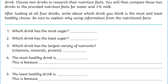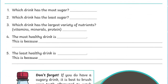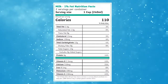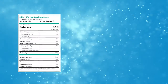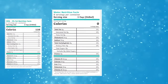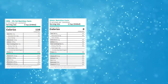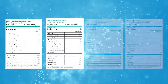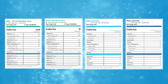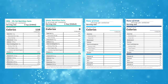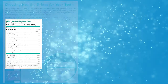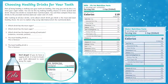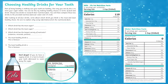This works well with our Choosing Healthy Drinks for Your Teeth activity. This worksheet includes four nutrition labels with the figures already filled in for milk and water, plus two blank labels for you to fill in with a drink of your choice. These can then be compared by your students as they work through the question sheet.